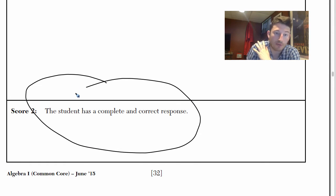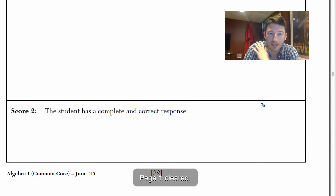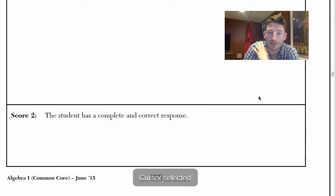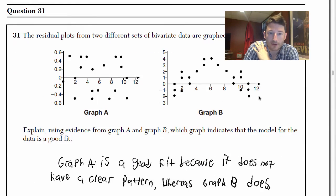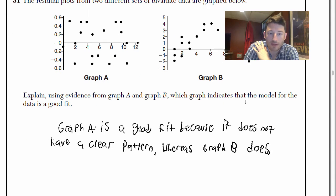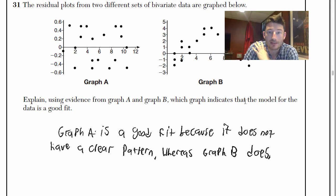And you know what's funny, if you look right here, it says this person or this student has a complete and correct response. They got full credit. What did they say? All they really said was Graph A is a good fit because it does not have a clear pattern.